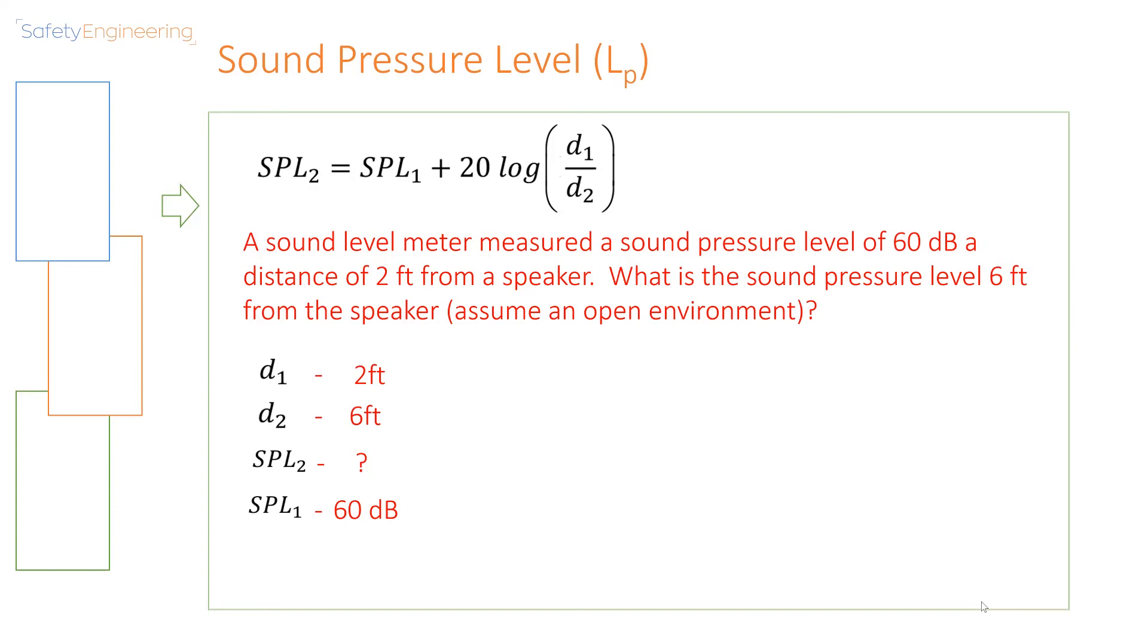Now, what we can do in this case is we can itemize our information to make it easy for us to put the relevant values into our equation. So in this example, D1 is 2 feet, D2 is 6 feet, SPL2 is unknown, and SPL1 is 60 decibels.